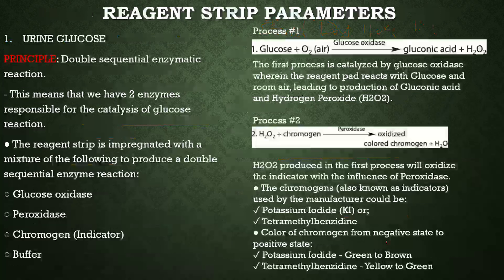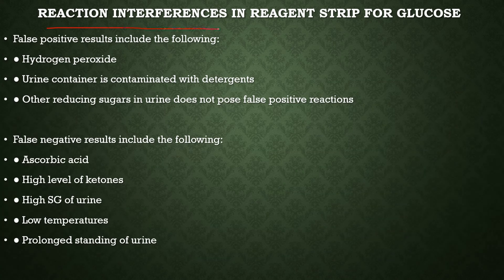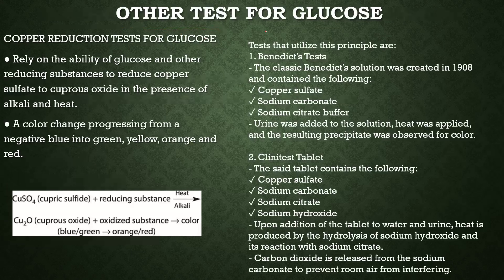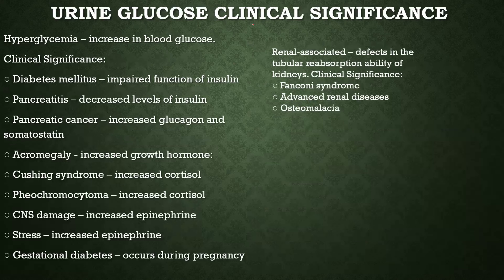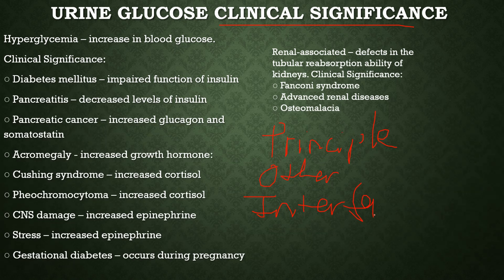For every parameter, I will include: the principle, reaction interferences (causes of erroneous results), other tests if available, and their clinical significance — meaning the diseases associated. These four will be the coverage of each parameter.